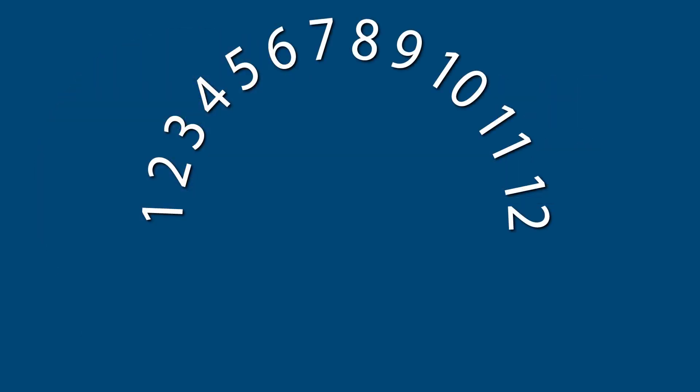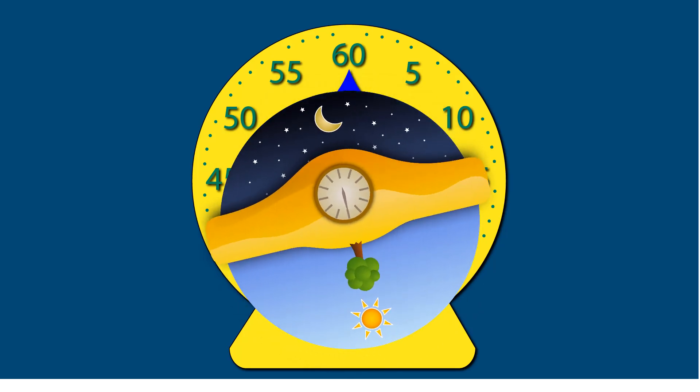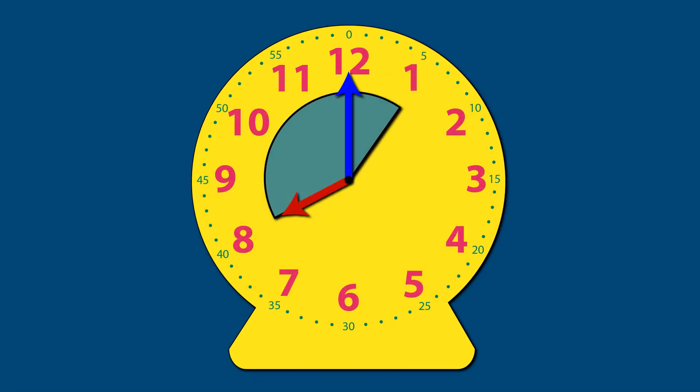However, remember that there are 12 hours in each half of the day and 60 minutes in each hour to avoid mistakes. And to find out how much time has passed, start at the earlier time and count forward.